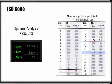The second number, 18, indicates that the number of particles greater than or equal to 6 micron in size is more than 1,300 and less than or equal to 2,500 per milliliter.